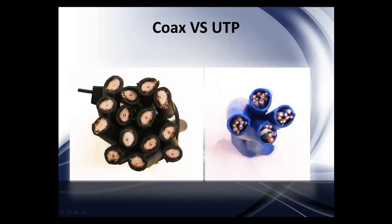On Cat5, as I said, four pairs equals four coax cables. So this right here would be 16 cables or 16 video channels. This is what you would need — 16 cables — if you were using straight coax without baluns.